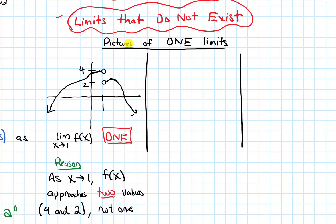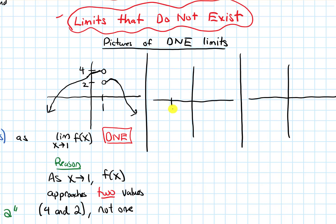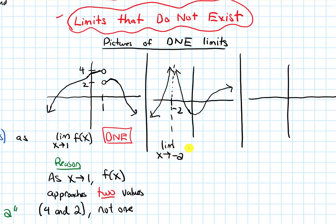Let's look at another picture where we'll have a DNE limit. In the second picture, I'll label negative 2 on the x-axis and put a vertical asymptote there, having my function go up to the vertical asymptote on both sides. Let's talk about what the limit is as x approaches negative 2.